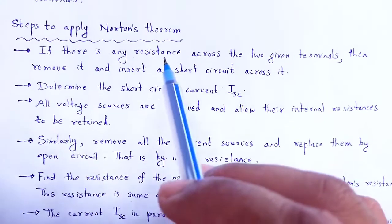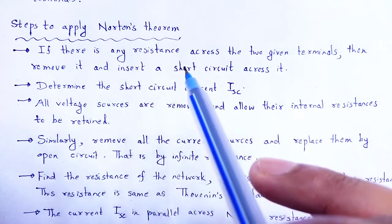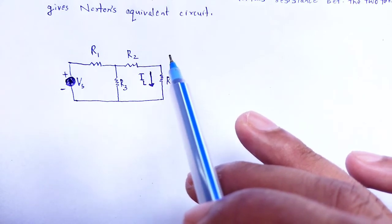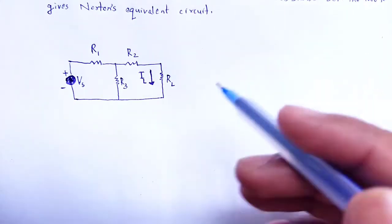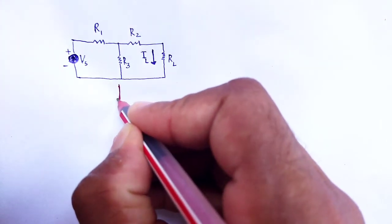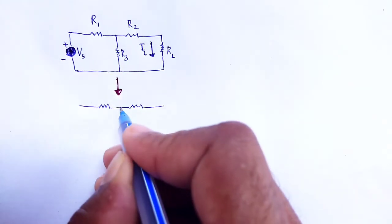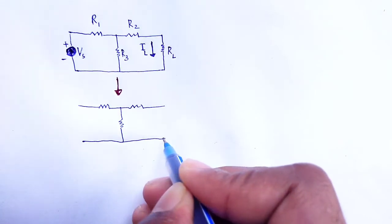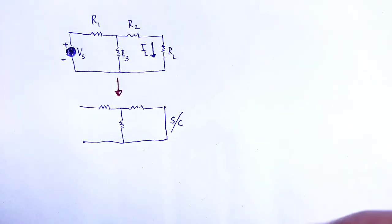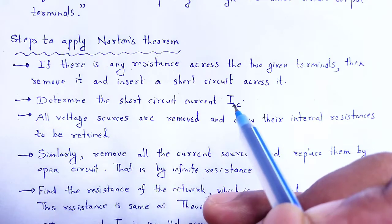Various steps we have to follow to apply Norton's theorem. First, if there is any resistance across the two given terminals, remove it and insert a short circuit across it. In the terminal there will be the load resistance — now we replace it and short circuit those given terminals. Here the terminals are short circuited, with R1, R2, R3, and we determine the short circuit current Isc.